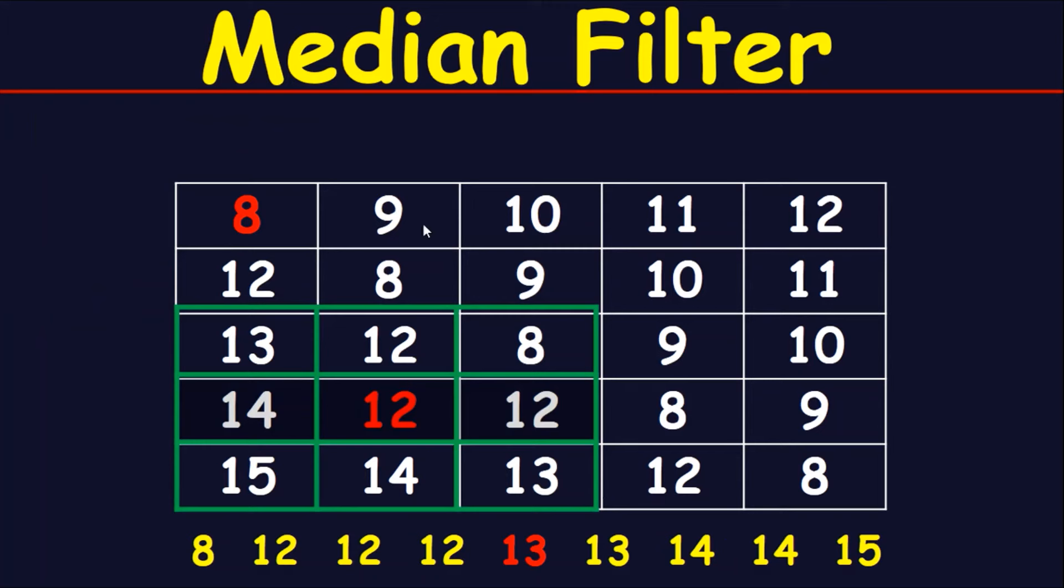Now let's apply the median filter on this cell, on this pixel. So I will sort the numbers in the mask ascendingly, and this is the middle number. So this pixel instead of 12, it will be 13. Okay?